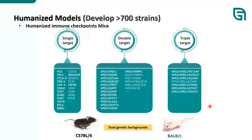Our Drug Screening Mouse project aims to develop over 700 strains, mostly humanized strains including human immune checkpoint mice. We offer double-, triple-, and even quadruple-target humanized mice for evaluation of antibody drugs, ADCs, and multi-target antibody drugs. Strains are available in both C57BL/6J and BALB/c backgrounds, providing different immune system characteristics to give customers more options.